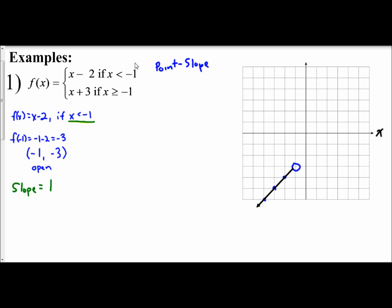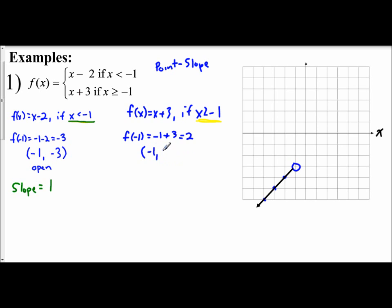Now let's look at the second part of the function: f(x) equals x plus 3 if x is greater than or equal to negative 1. Same idea — we look at our boundary. x has to be greater than or equal to negative 1. So I plug negative 1 into our function: f(negative 1) equals negative 1 plus 3, which is 2. My starting point is going to be negative 1, 2. Since it's 'or equal to,' this is going to be a closed circle at negative 1, 2.